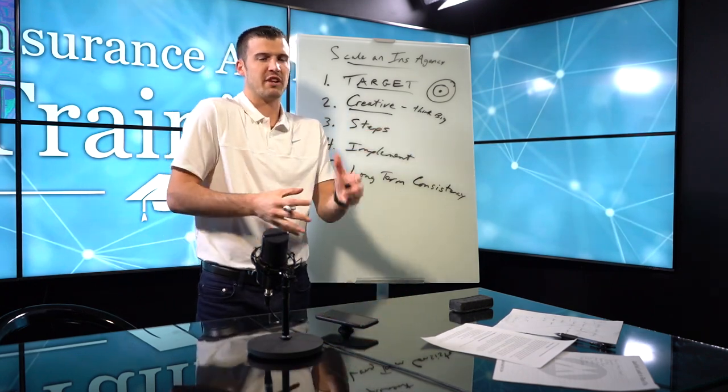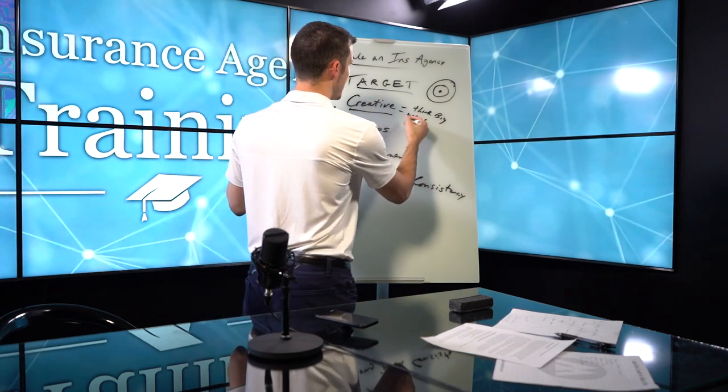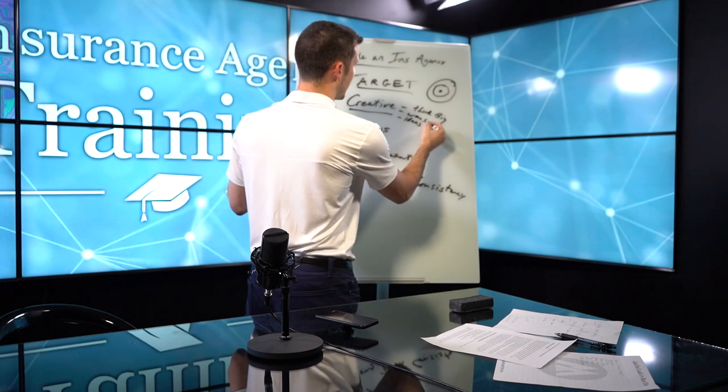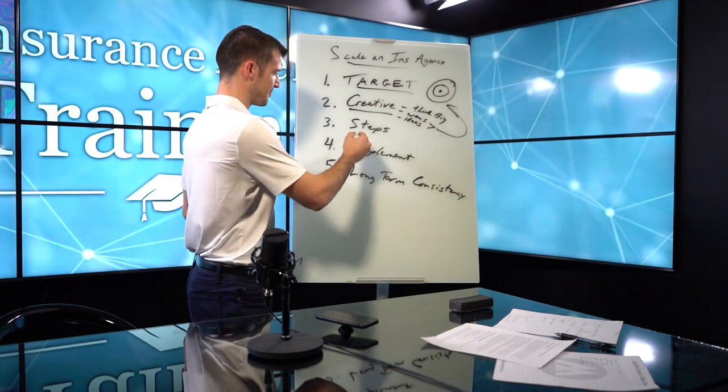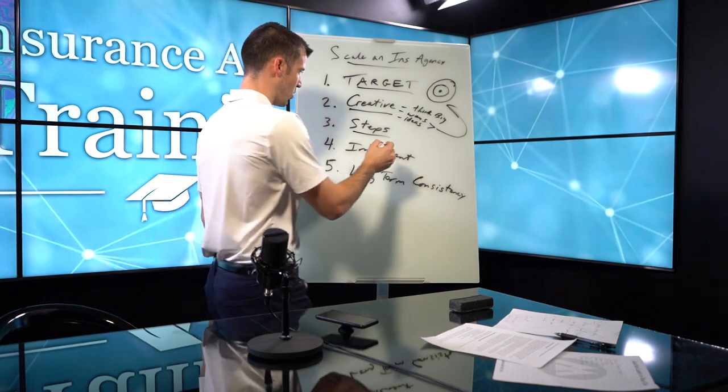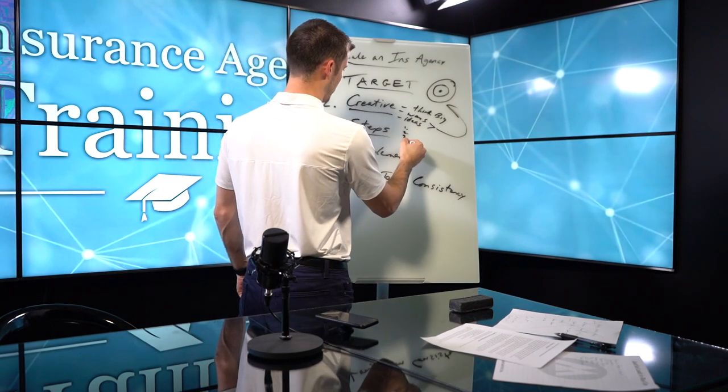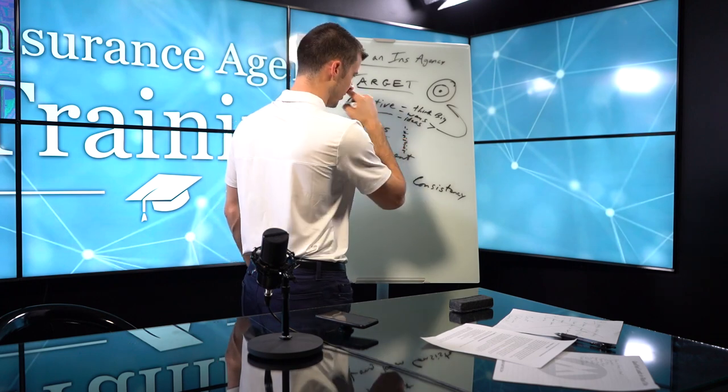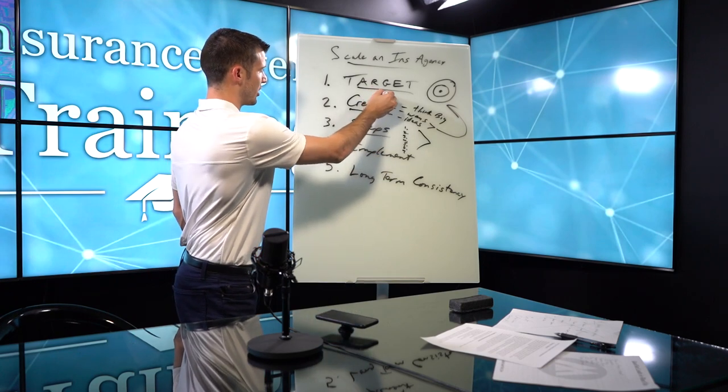That's where thinking big comes in. It's being creative. Because you've got to find ways and ideas to make this target a reality. Also, what are the steps? What are the steps? One, you guys see me, I'm always using steps. One, two, three, four, five, six, seven, whatever. What are the steps for you to hit this target? Do you know what they are?